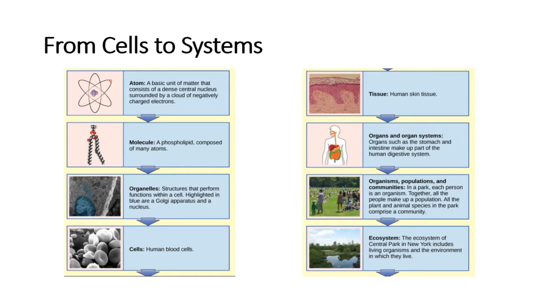An organ system is a higher level of organization that consists of functionally related organs. For example, vertebrate animals have many organ systems, such as the circulatory system that transports blood throughout the body and to and from the lungs. It includes organs such as the heart and blood vessels.